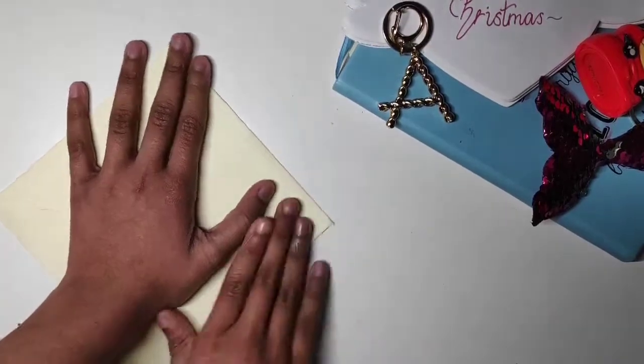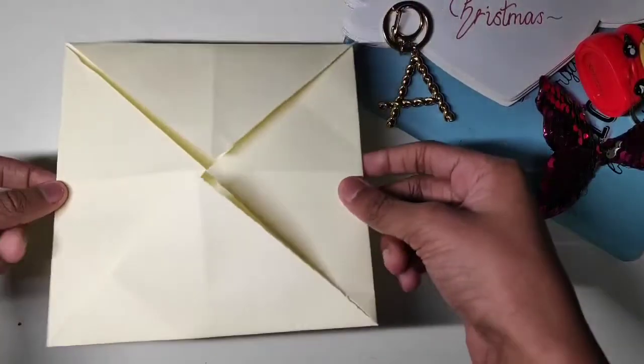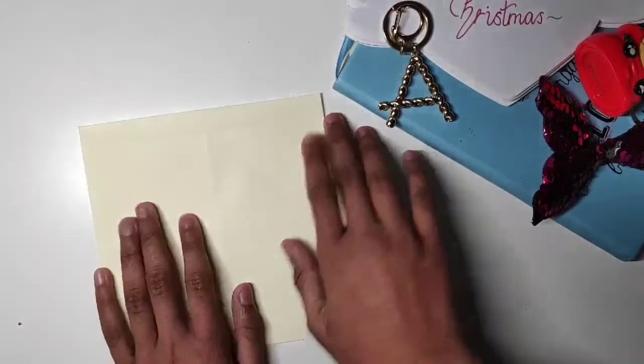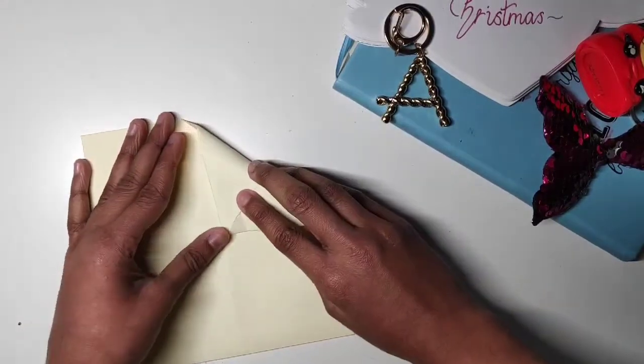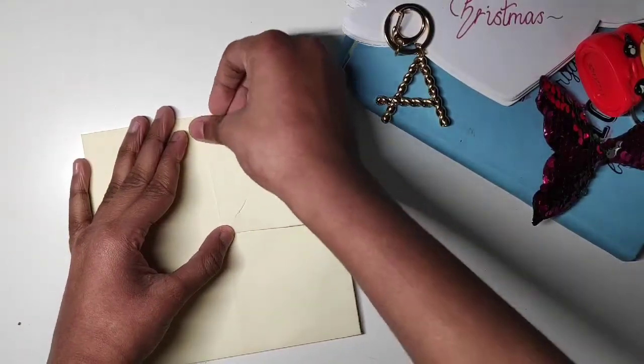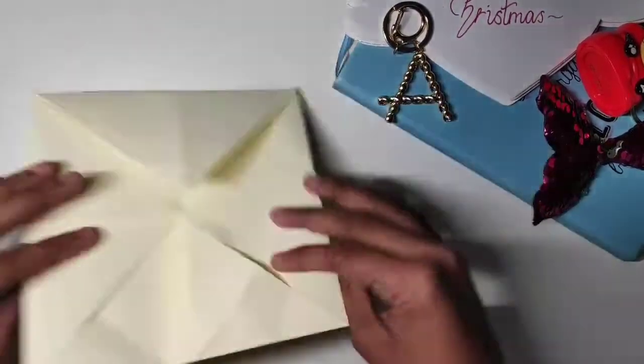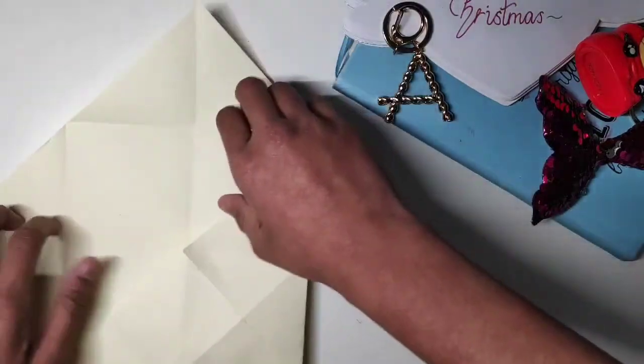Okay, so now once you have got this, make it into a square like that. So basically you've got this. Now I'm going to flip it over and I'm going to do the same. So I'm going to take this.